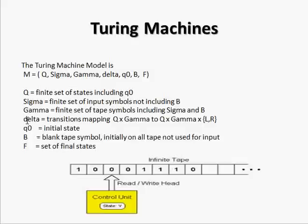Delta is the transition function that defines at what input you will go to which state, whether you will go left or right, and what will be the new symbol. We will discuss this further.